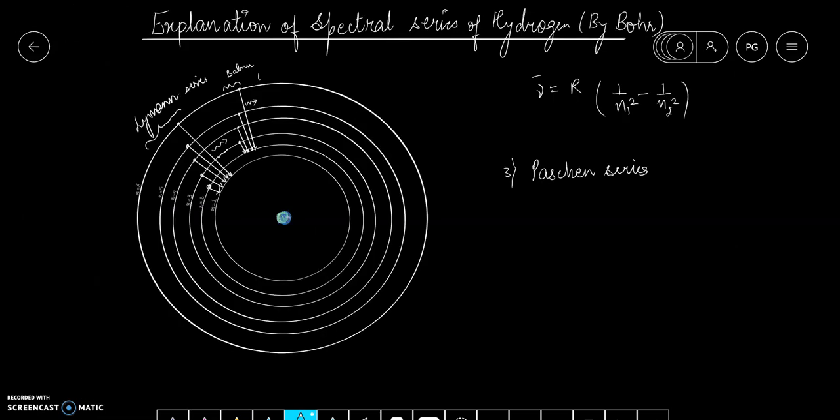Now let's talk about the Paschen series, in which the electron is jumping to the inner orbit, that is third orbit, and it's jumping from the outer orbits 4, 5 and so on.